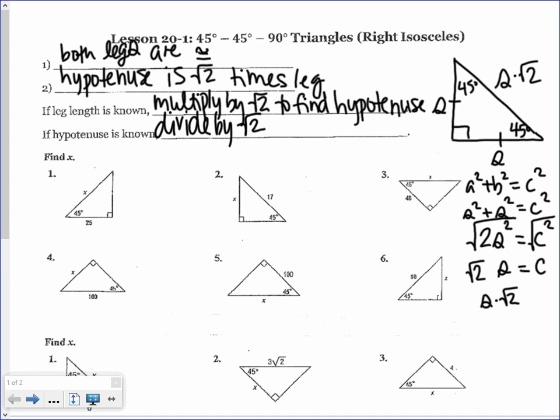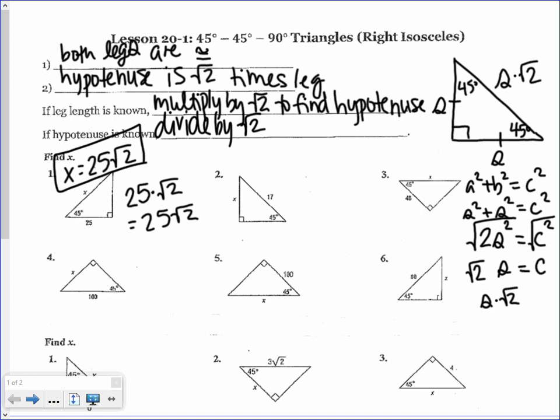Looking at number 1: you have a 45 degree angle and it's a right triangle, so this is a 45-45-90 triangle. They give us the leg, so we multiply by the square root of 2 to find the hypotenuse. 25 times the square root of 2 is simply 25√2. So x equals 25√2 — you don't need your calculator; you can leave it just like that.